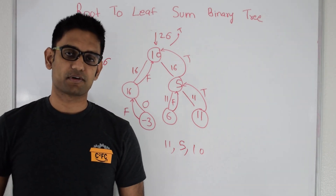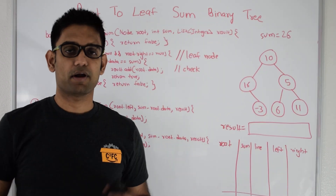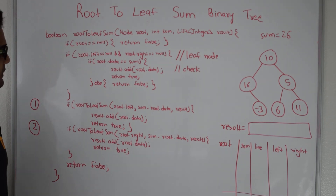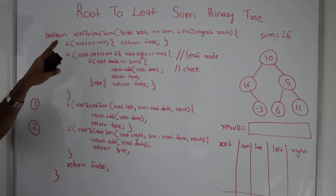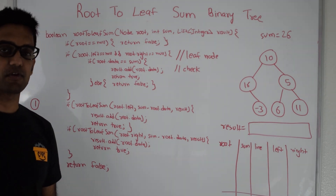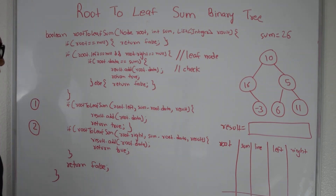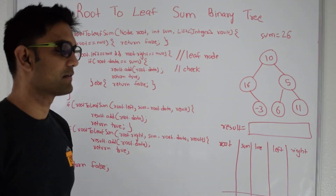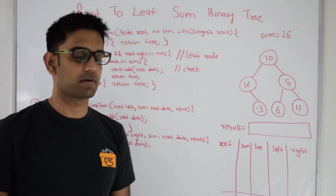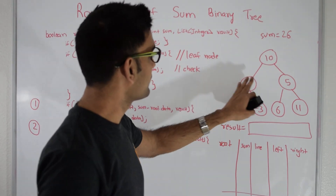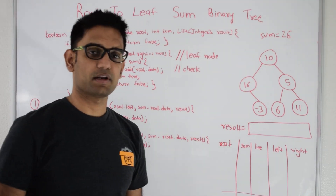Now let's look at the code for this function. This is the code for root-to-leaf sum. It's a recursive function named root-to-leaf sum that returns true if it finds the sum from root to leaf, otherwise false. The parameters are the root of the tree, the sum, and a result list which will store the final path.